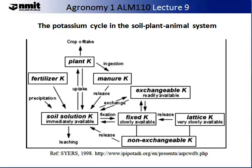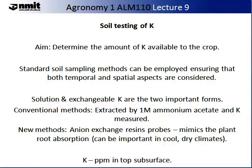The aim of soil testing of potassium is to determine the amount available to the crop. Standard sampling methods should ensure both temporal and spatial aspects are considered. Solution and exchangeable potassium ions are the two important forms to consider in any test. The conventional method is to extract in one molar ammonium acetate and measure the potassium in the resulting solution, though this is not always a good measure, particularly in cool and dry climates. A new method based on an anion exchange resin probe mimics plant root absorption. Potassium is reported in parts per million and is usually only measured in the top surface soil.